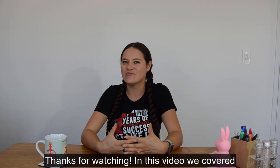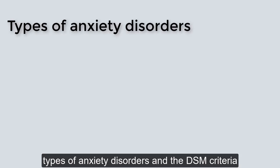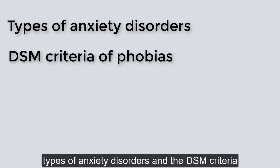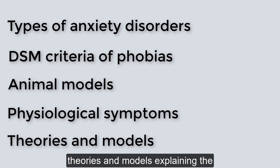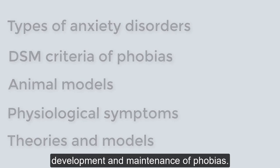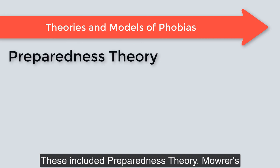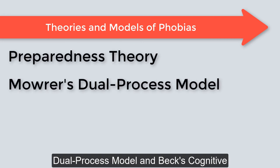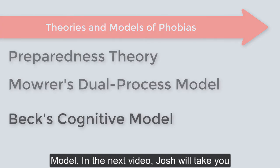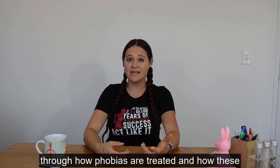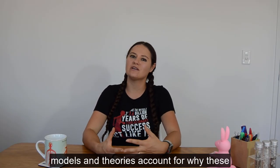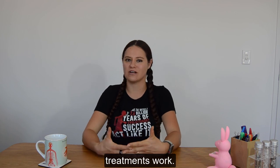Thanks for watching. In this video, we covered types of anxiety disorders and the DSM criteria of phobias, animal models and the physiological symptoms of anxiety disorders, as well as theories and models explaining the development and maintenance of phobias — including preparedness theory, Mowrer's dual process model, and Beck's cognitive model. In the next video, Josh will take you through how phobias are treated and how these models and theories account for why these treatments work.